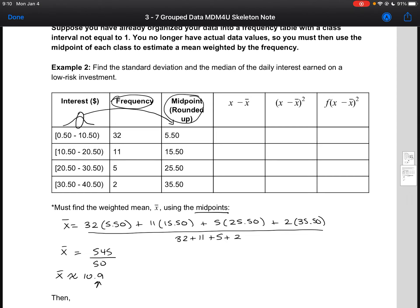Once we have that weighted mean, we can now calculate our deviations, our deviations squared, and then our frequency times our deviations squared. So let's go through that. Just like in example one, what you might want to do is pause the video, complete the table on your own and make sure that you're getting the same values.